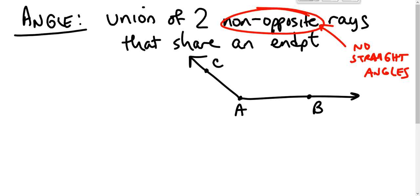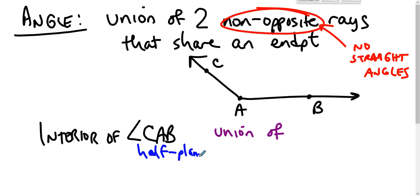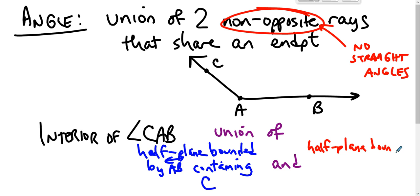So we don't normally talk about angles. We talk about the space inside the angle. So we should probably talk about the interior of an angle. What do we mean by the interior of angle CAB? How do we describe this area out here? Well, we would say that it's the union of the half plane, and the half plane bounded by line AB containing C, and the half plane bounded by AC containing B.